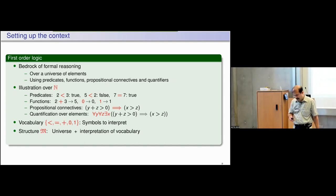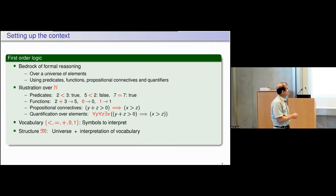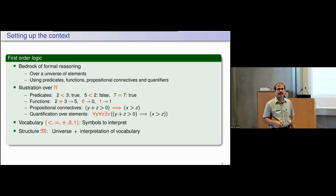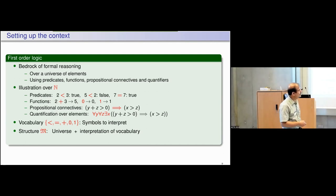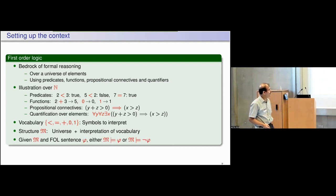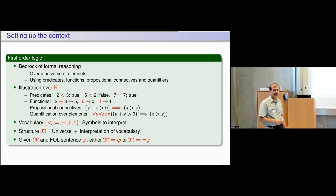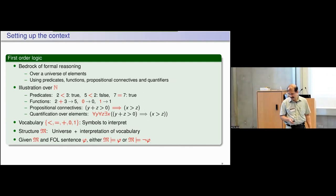If I give you a structure corresponding to a vocabulary and a formula corresponding to that vocabulary, then either that formula evaluates to true or false. In this case it is a sentence with no free variables, so either the sentence evaluates to true over that structure or it evaluates to false. This is standard first order logic.